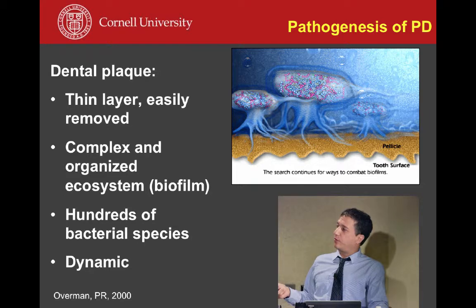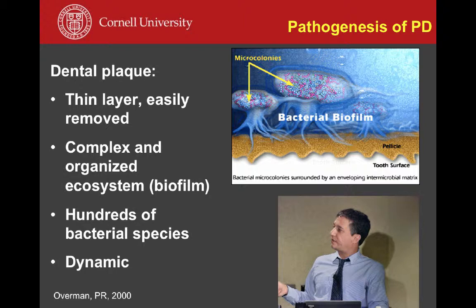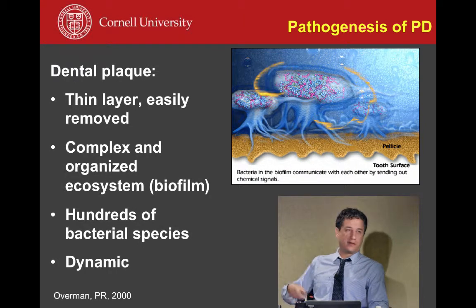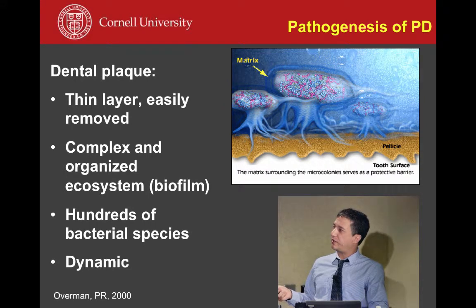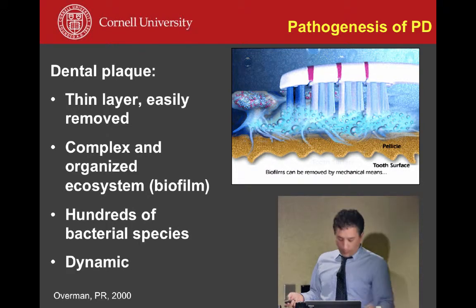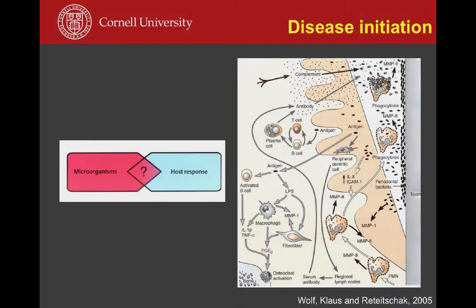Plaque is actually a biofilm — a very complex and organized ecosystem. There are hundreds of different bacteria that can be present, some considered more virulent or pathogenic than others. Ultimately, which animals develop disease depends heavily on the host itself. Susceptibility is a big factor: we may have plaque and bacteria present, but if the host is not susceptible, disease will be mild or absent. Conversely, with minimal plaque but a very susceptible host, there's a good chance the animal will develop disease regardless of prevention.